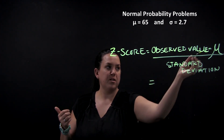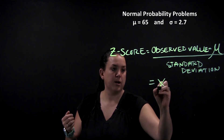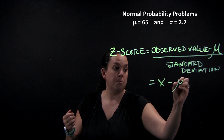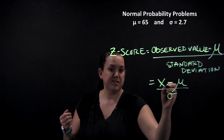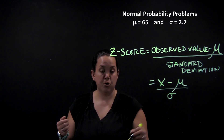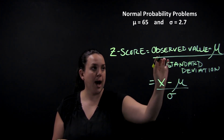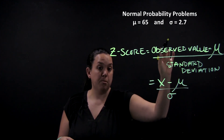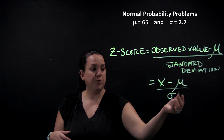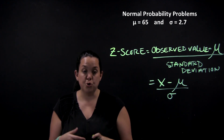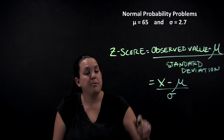To rewrite this: the observed value, sometimes referred to as capital X, minus the population mean mu. The numerator measures how far away from the population mean you are, and also gives you a direction. Then you divide by sigma to put it in units of standard deviation.